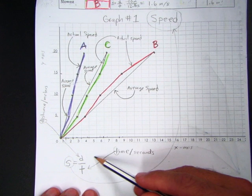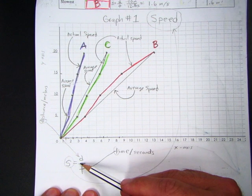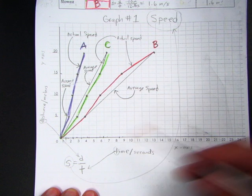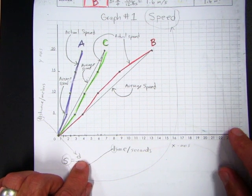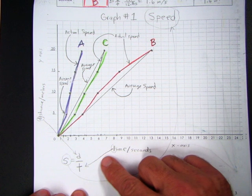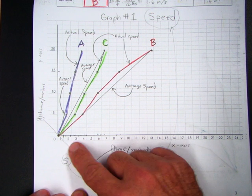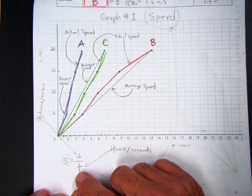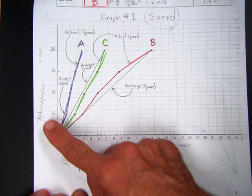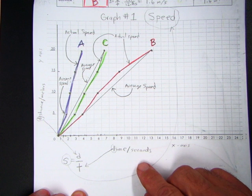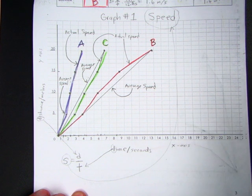Now remember, the formula for speed is s equals d over t. And if you take a look from distance, that's where we get the d. And over here, time, we get the t. So again, remember, this is the formula for speed, d over t. Notice right here, we've got distance and we've got time. So this must be a speed graph.